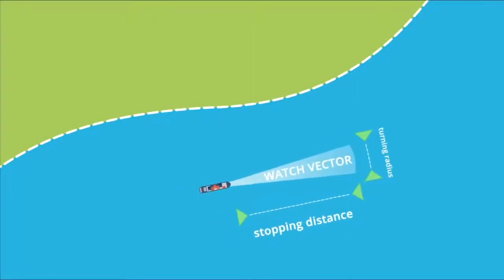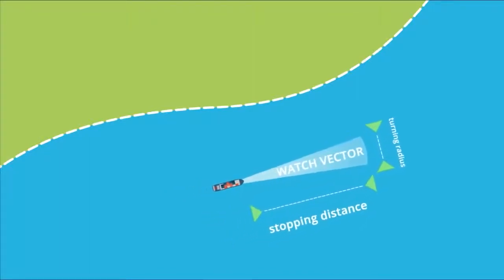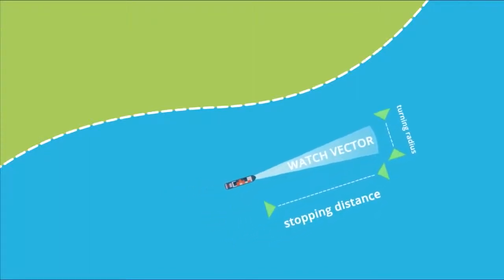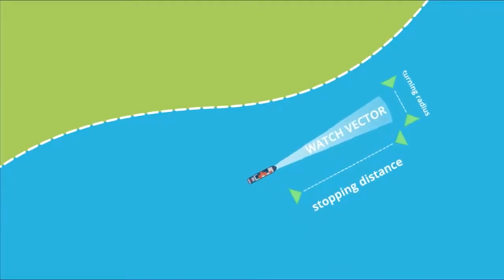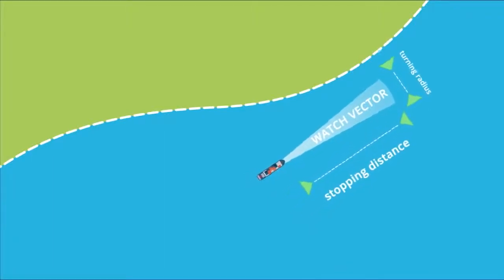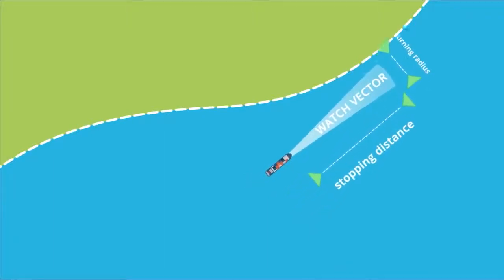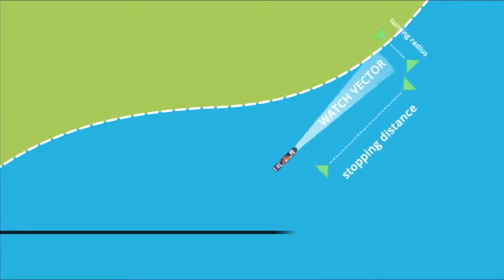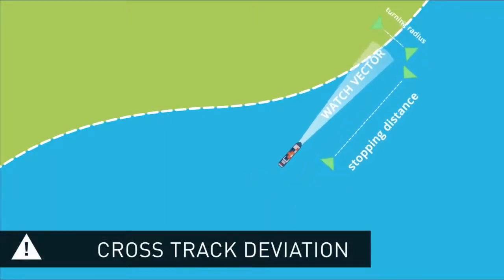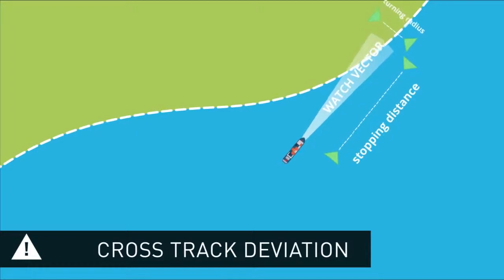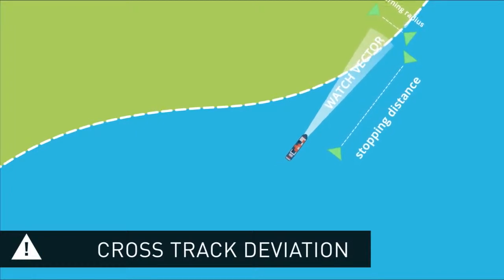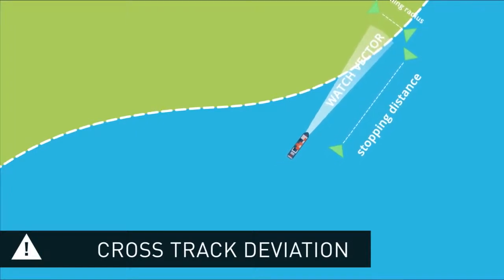The watch vector defines the area in which ECDIS will alarm should the vessel approach a navigational hazard. Without this setting, the ECDIS will provide no advance warning.